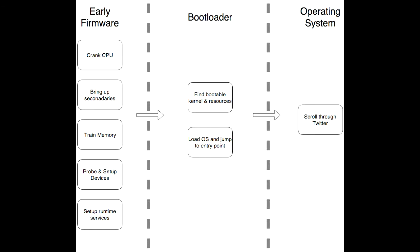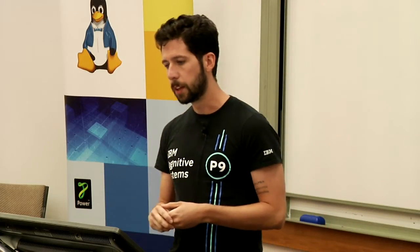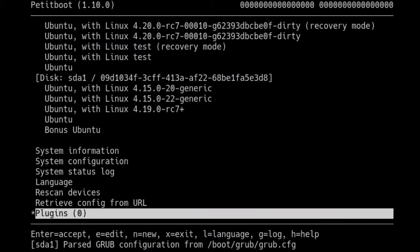The bootloader stage gets your devices turned on, loads drivers, finds anything you can boot, loads that into memory, and jumps into it — and this is the space where Petitboot lives. You may have heard about OpenPower in other talks; it's a fully open-source firmware stack running on IBM power systems. When IBM was putting all this together, HostBoot takes care of early steps, SkiBoot handles some others, and then Petitboot fills the bootloader role.